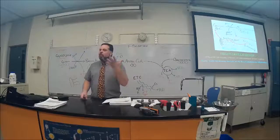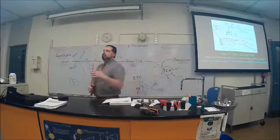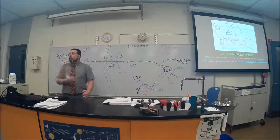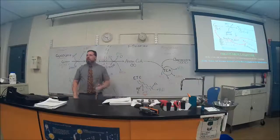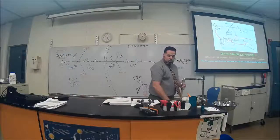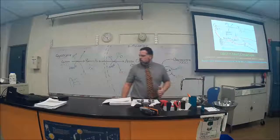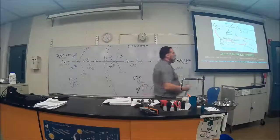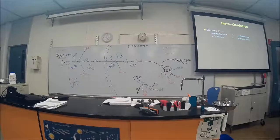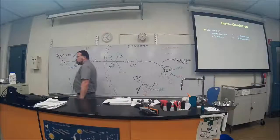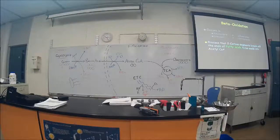Think about all those acetyl-CoA molecules entering the citric acid cycle and how much energy you get — that's the big picture. In eukaryotes — you and me, and in plants — beta oxidation happens in the mitochondria. Prokaryotes don't have mitochondria, so in them it happens in the cytoplasm.